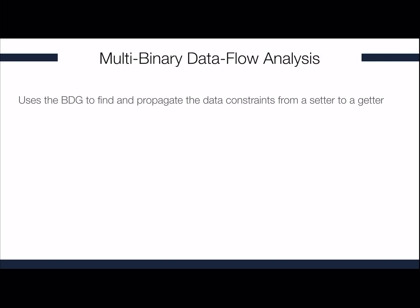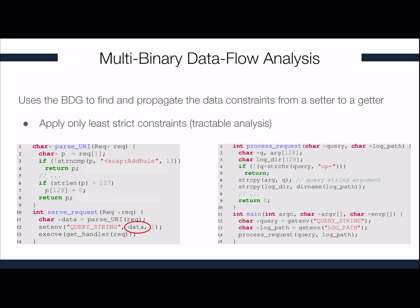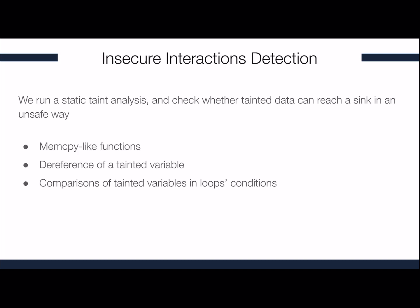The multi-binary data flow analysis module uses the BDG to find and propagate data constraints from a setter to a getter. To keep the analysis tractable, we only apply and propagate the least strict constraints. In our example, the variable data was tainted because of two different program paths from function parseURI — the first path at line 4 contains unconstrained data, while the second contains constrained data. As such, we only consider the first set of constraints (in this case the empty set) and propagate this to the getter binary, causing the variable query at line 12 in the getter binary to be unconstrained. We then run a static taint analysis and check whether tainted data can reach a sink in an unsafe way. We consider sinks to be memcopy-like functions, the dereference of a tainted variable, and comparisons between tainted variables in loop conditions to spot use vulnerabilities.